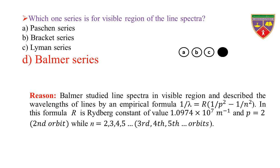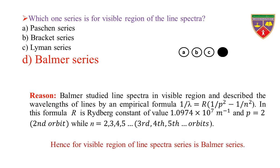Reason: Balmer studied the line spectrum in the visible region and described the wavelength of lines by an empirical formula. In this formula, R is a constant of value 1.0974 × 10⁷ per meter, and p = 2, which is the second orbit, while n = 2, 3, 4, 5, and so on, which are the third, fourth, fifth, and so on orbits. This series covers the visible region of line spectra — it is the Balmer series.